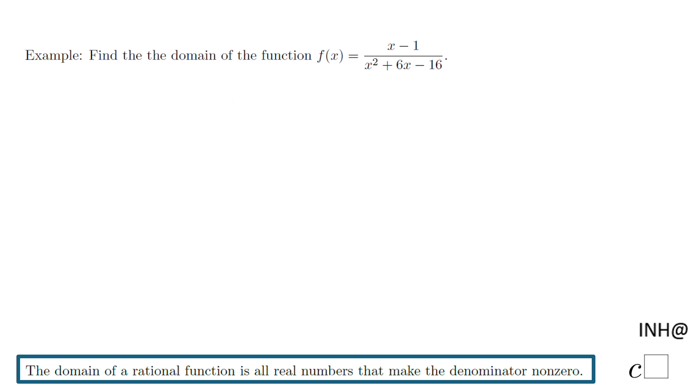Welcome back. I'm Ed at C-squared. In this example, we need to find the domain of the function f(x) = (x - 1)/(x² + 6x - 16). This is what we call a rational function - it is a quotient between two polynomials: x - 1 and x² + 6x - 16.